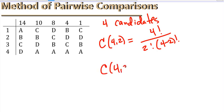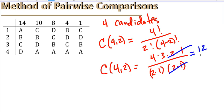So, C of 4 comma 2 is 4 factorial over 2 factorial times 4 minus 2 factorial, which is 4 times 3 times 2 times 1 over 2 times 1 times 2 times 1. And we can see that the 2 times 1 cancel. 4 times 3 is 12, 2 times 1 is 2. So, there are six pairs that we need to list out.